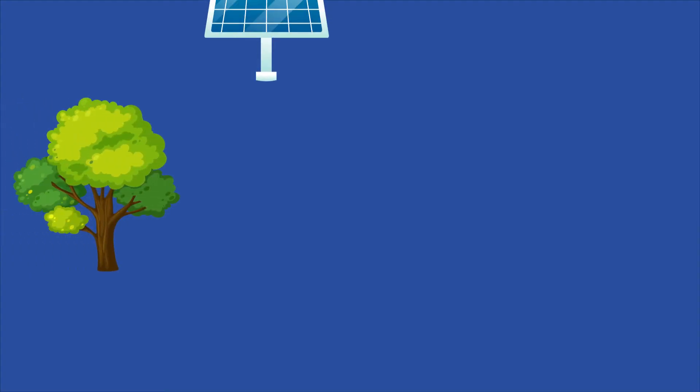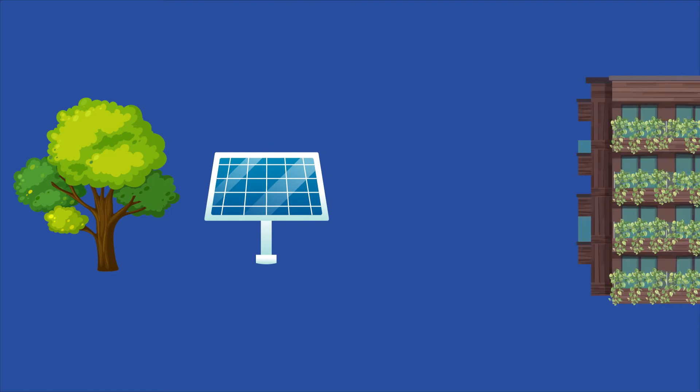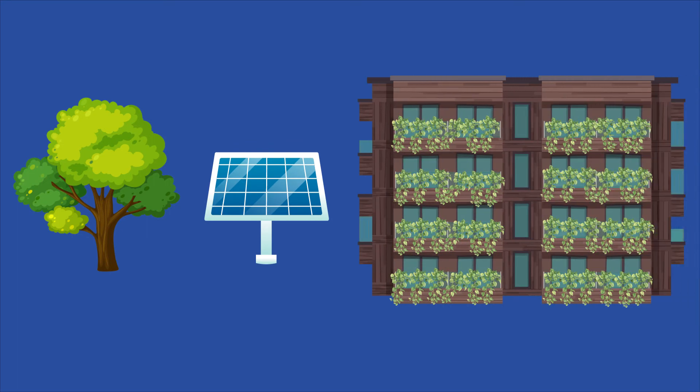Carbon offsets can support various projects, including afforestation, solar energy, and energy efficient buildings. However, some projects are more effective than others, and critics say that offsets are used as an excuse for not changing one's habits.